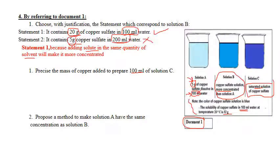We have 100 milliliters here and the solubility is for 100 milliliters, so I should put a mass equal to the solubility to prepare a saturated solution. C is saturated so its concentration equals the solubility.